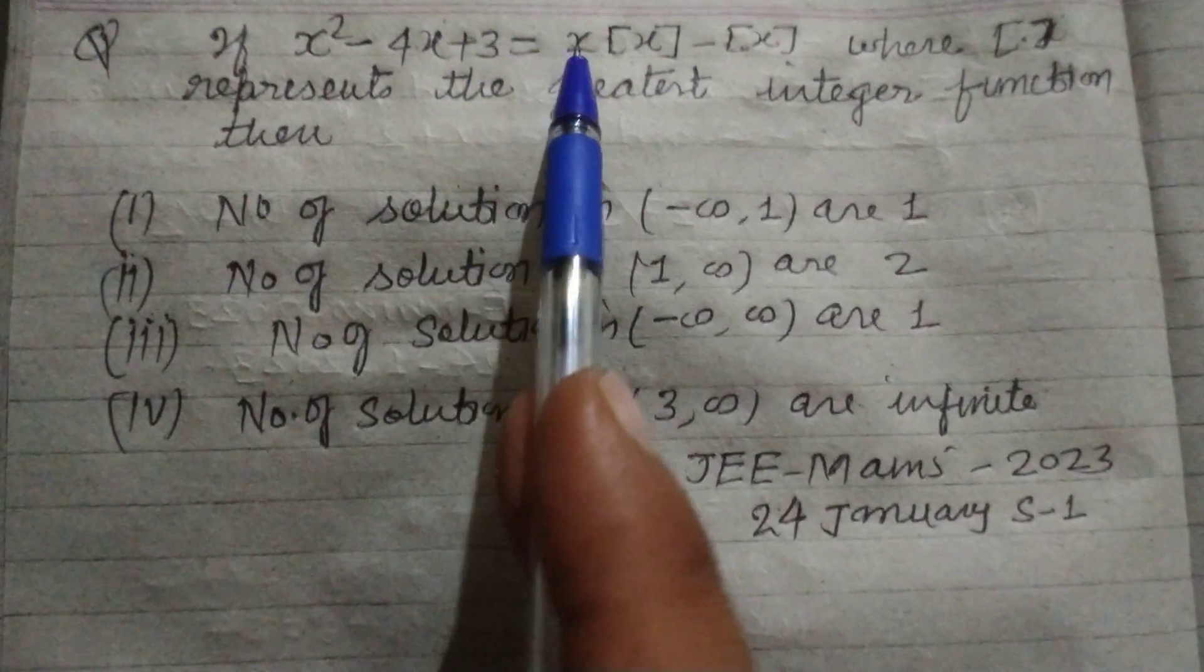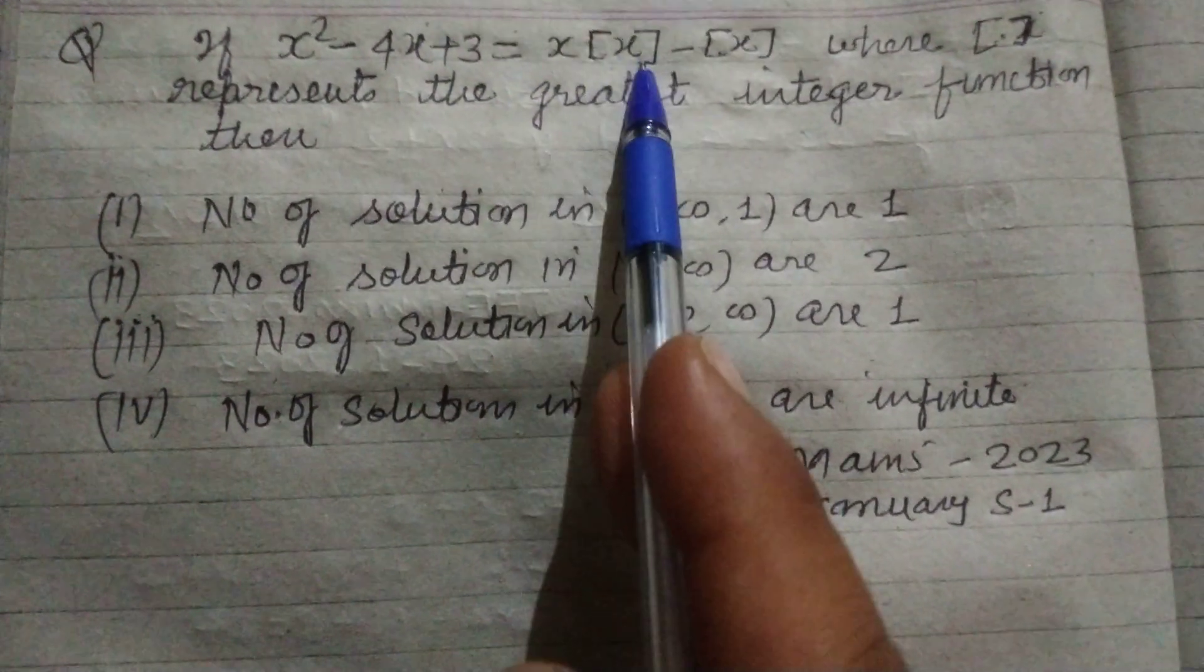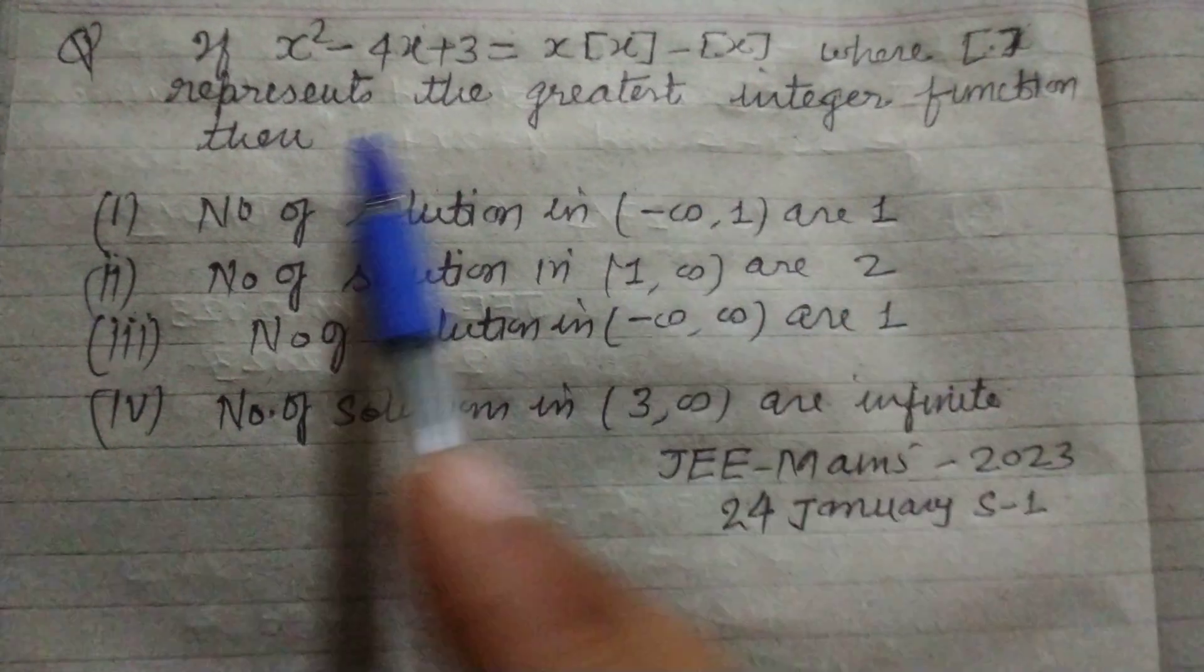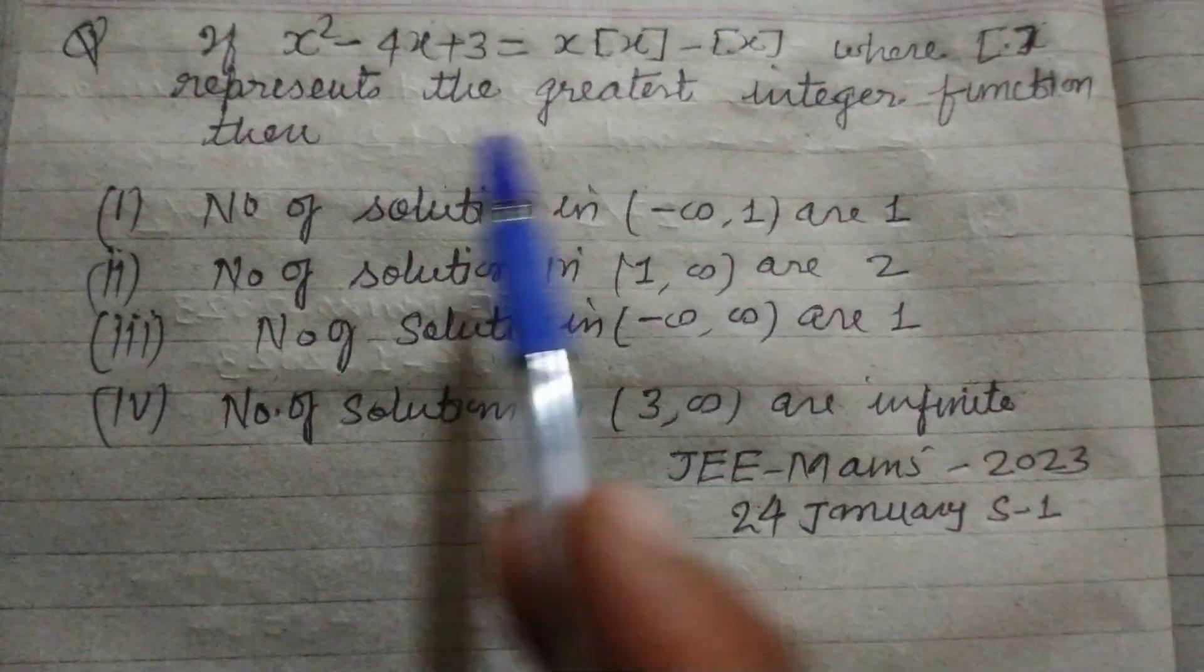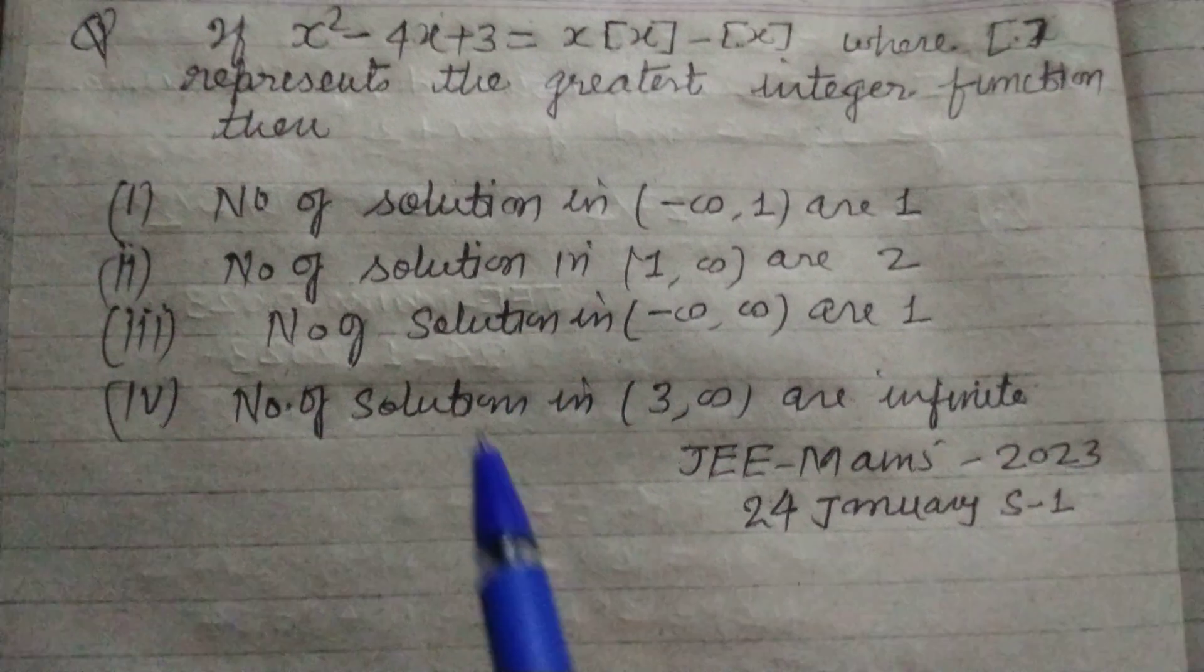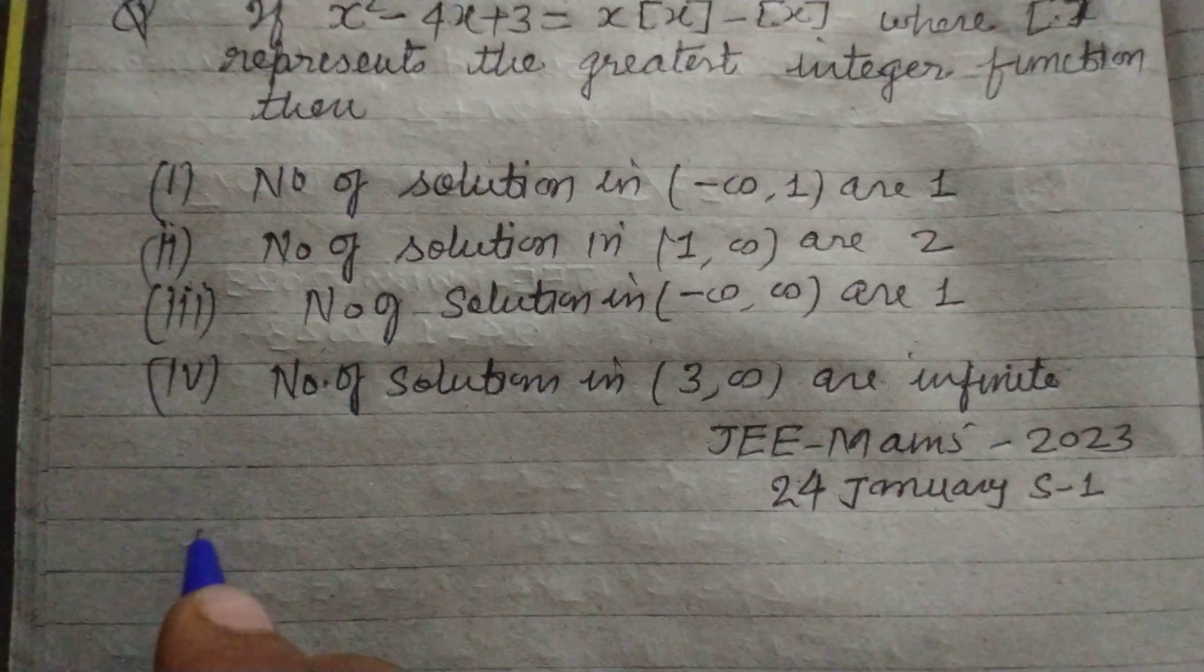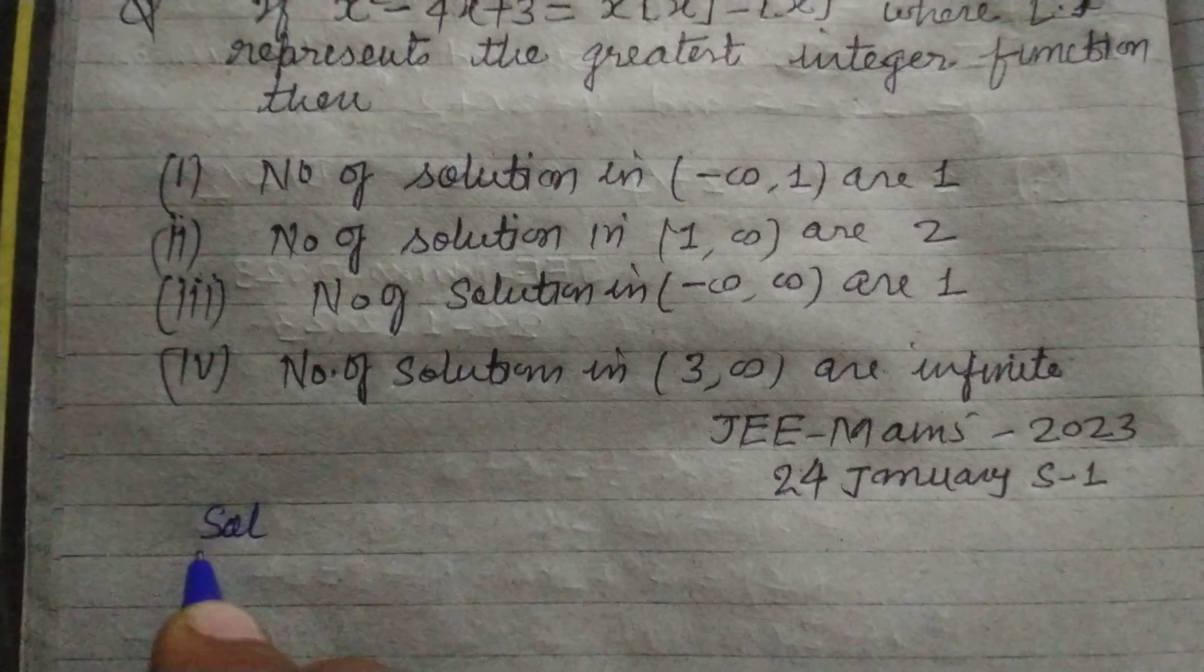If x² - 4x + 3 = x[x] - [x], where [x] represents the greatest integer function, then find the number of solutions of this given equation. So student, first we write the